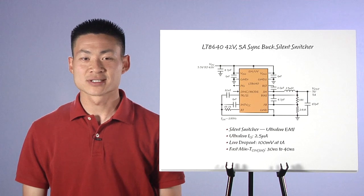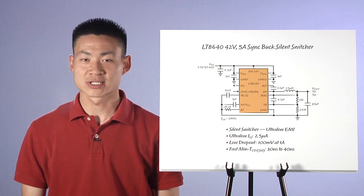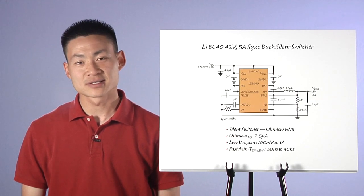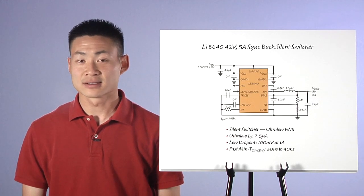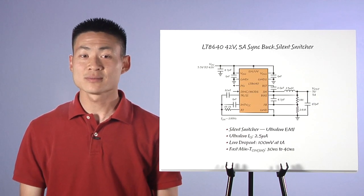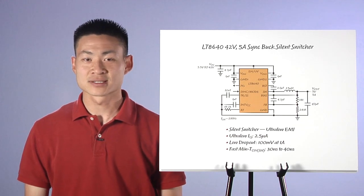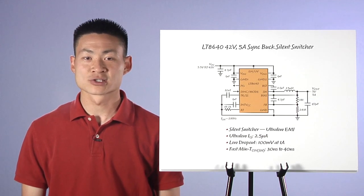Traditional solutions control EMI with a metal shield or slow switching edges, but both have undesirable trade-offs. The LT8640 keeps EMI emissions low while offering a high-speed, efficient, and small buck regulator solution.